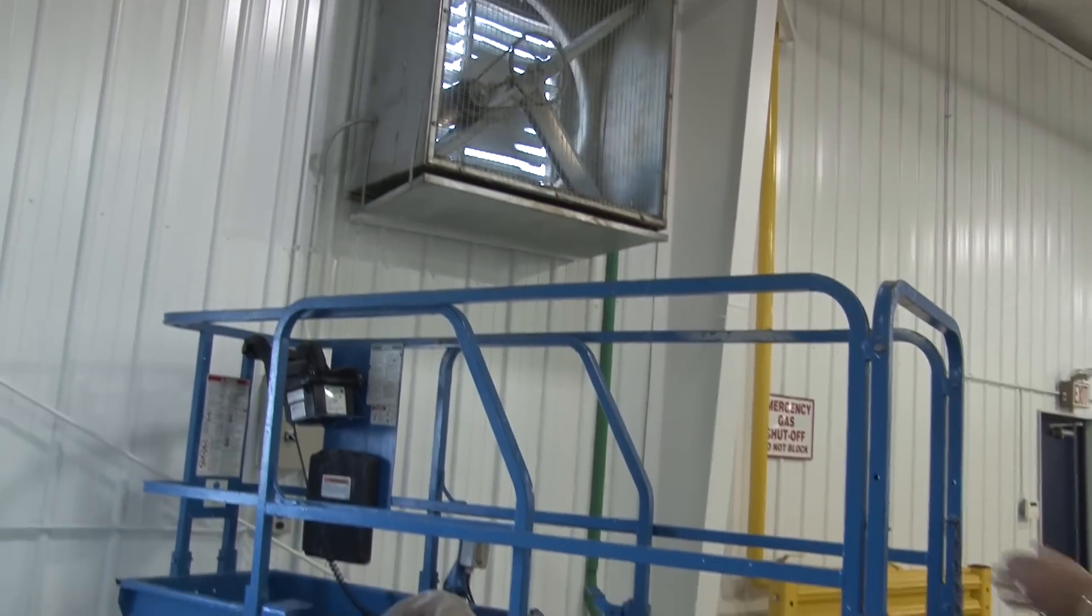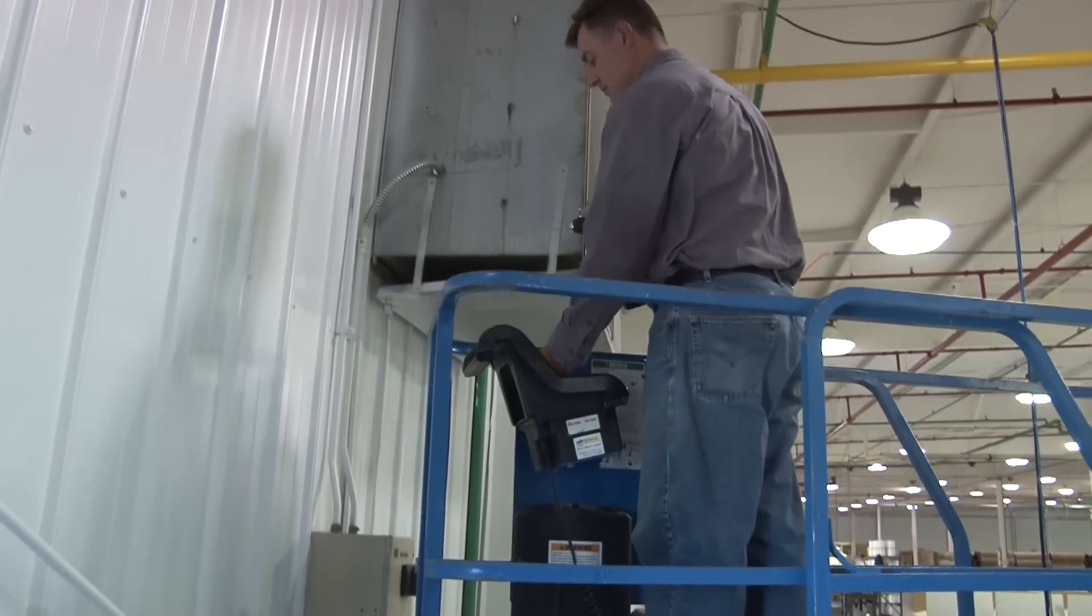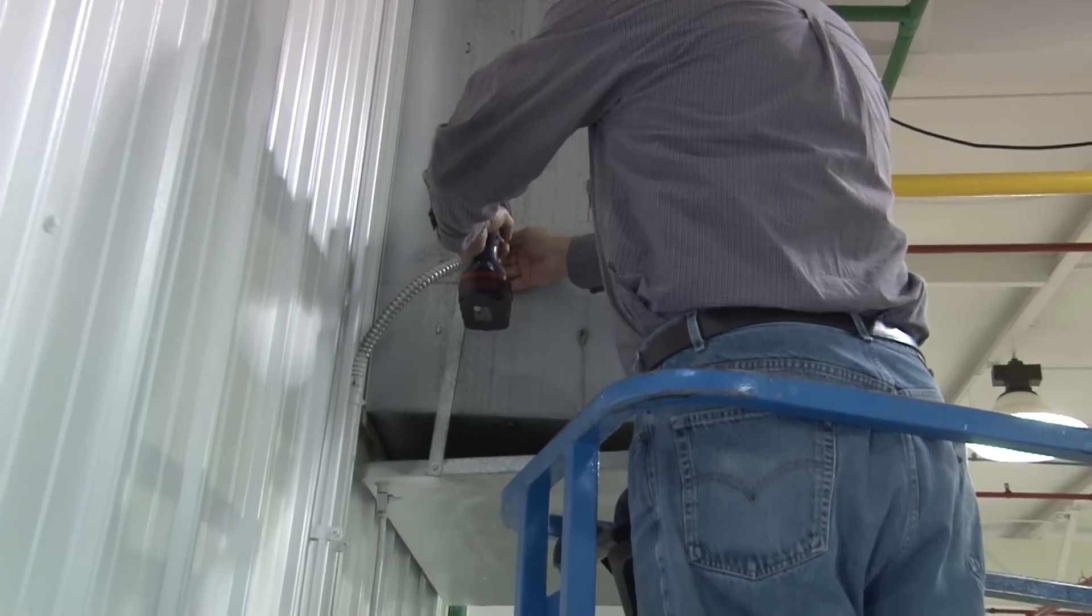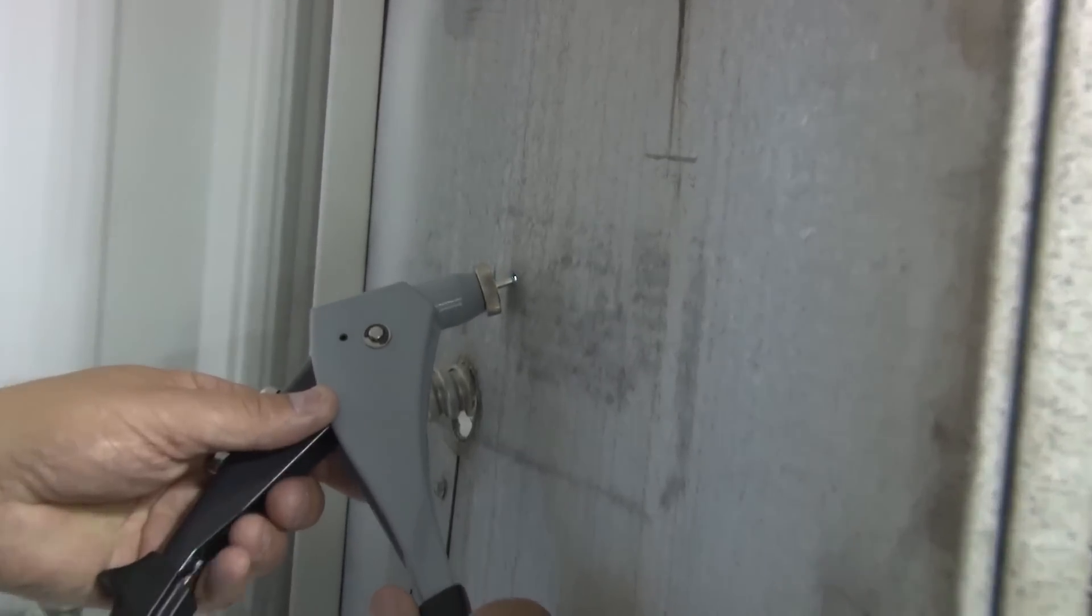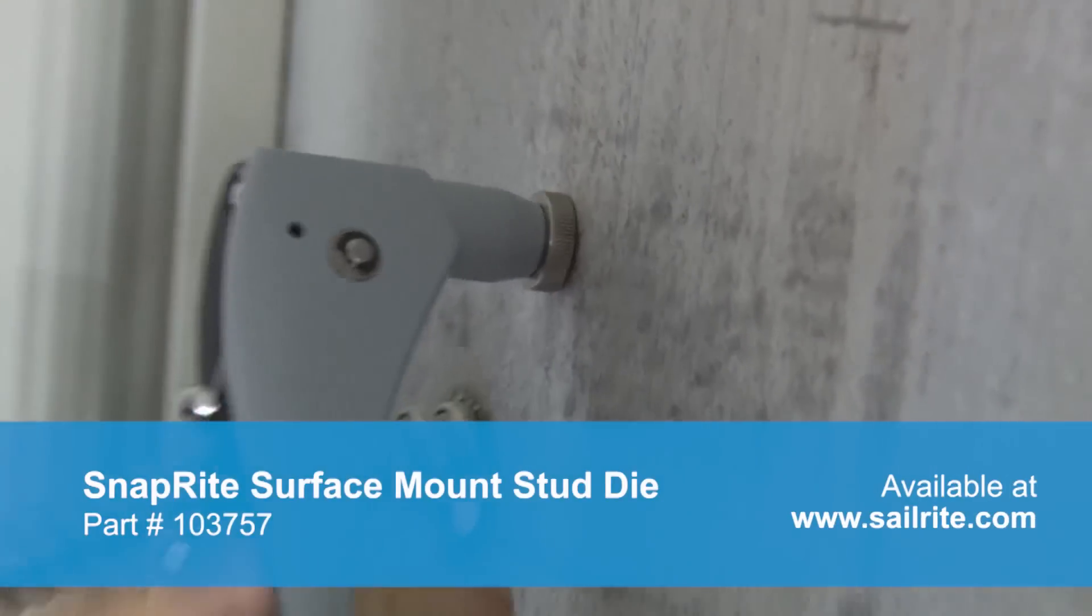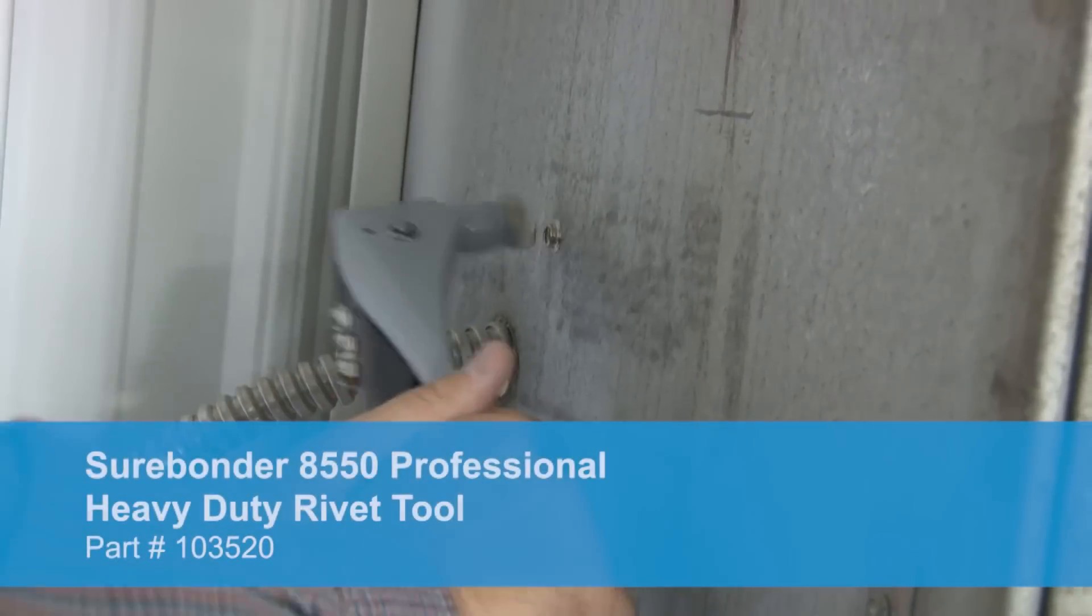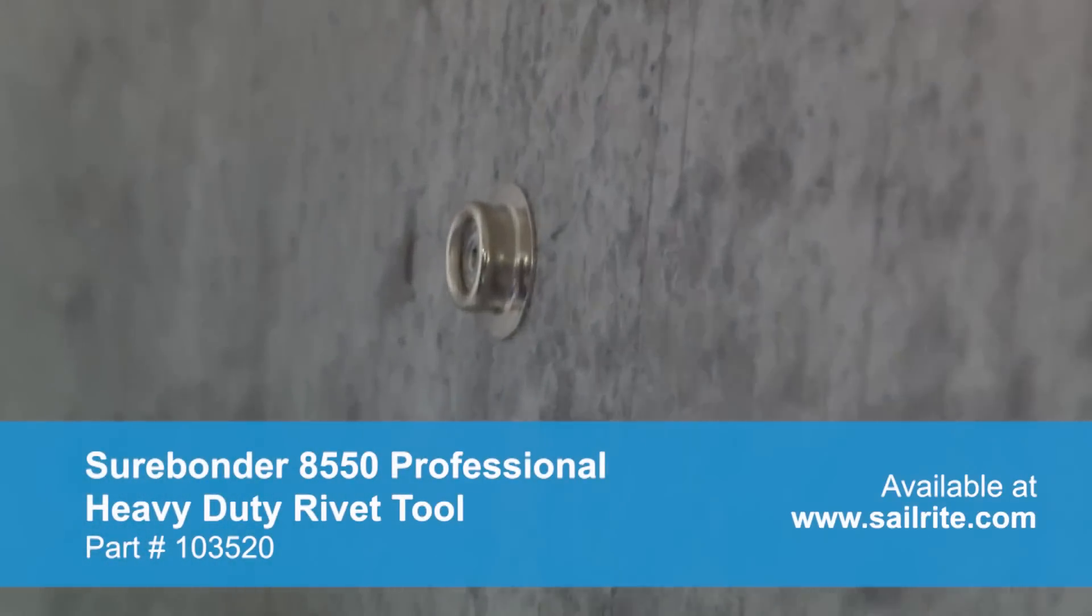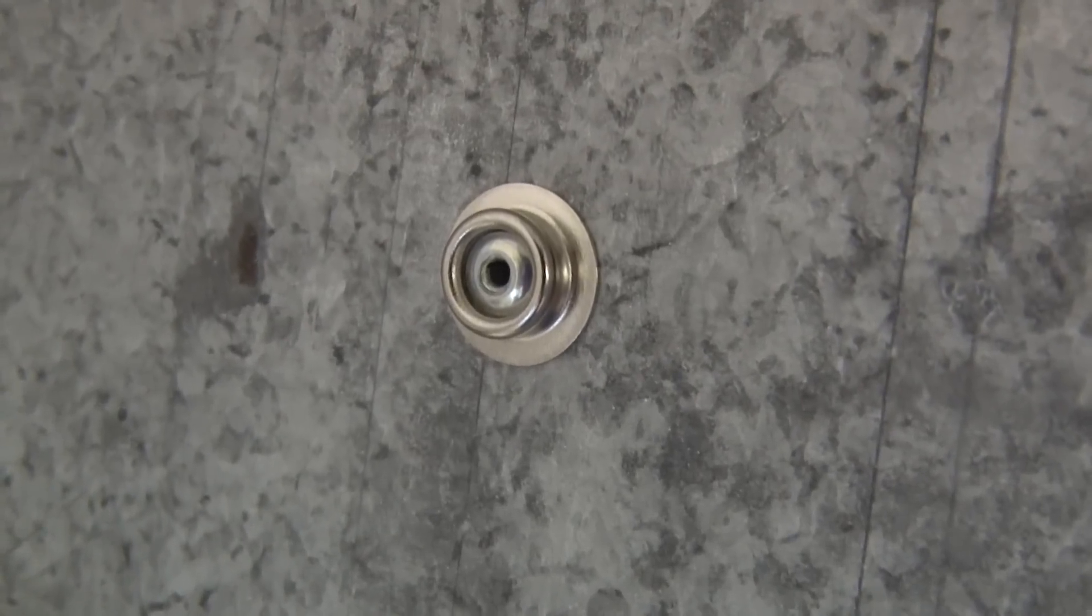We'll now be using this new die to install a snap with a rivet in sheet metal. This is a ventilation fan that's surrounded with a sheet metal box. We're going to pre-drill our 1⁄8 inch hole and then use the Snap-Rite Surface Mount stud die to secure the snap stud. If you've ever tried to install a snap stud using a self-tapping screw into sheet metal, you know it's almost impossible and doesn't hold well. Using a snap with a rivet works perfectly.